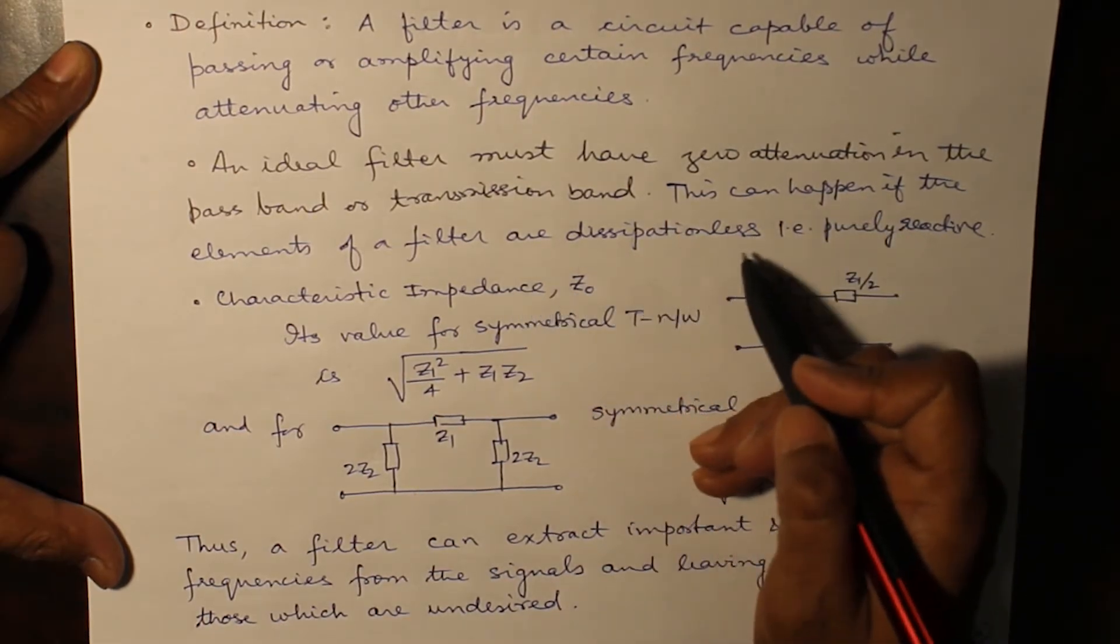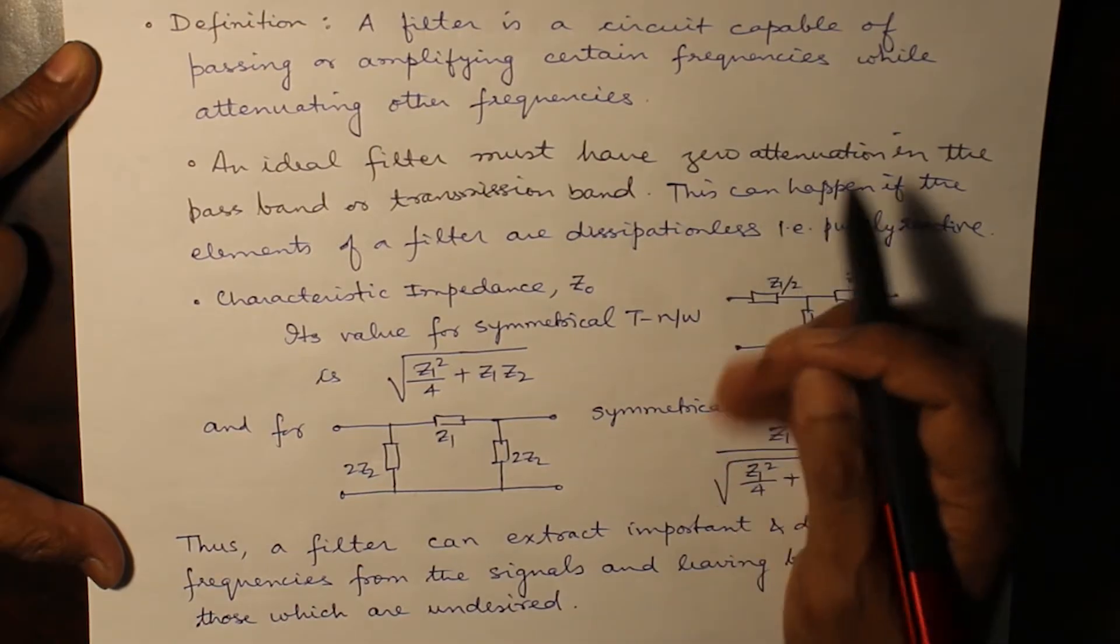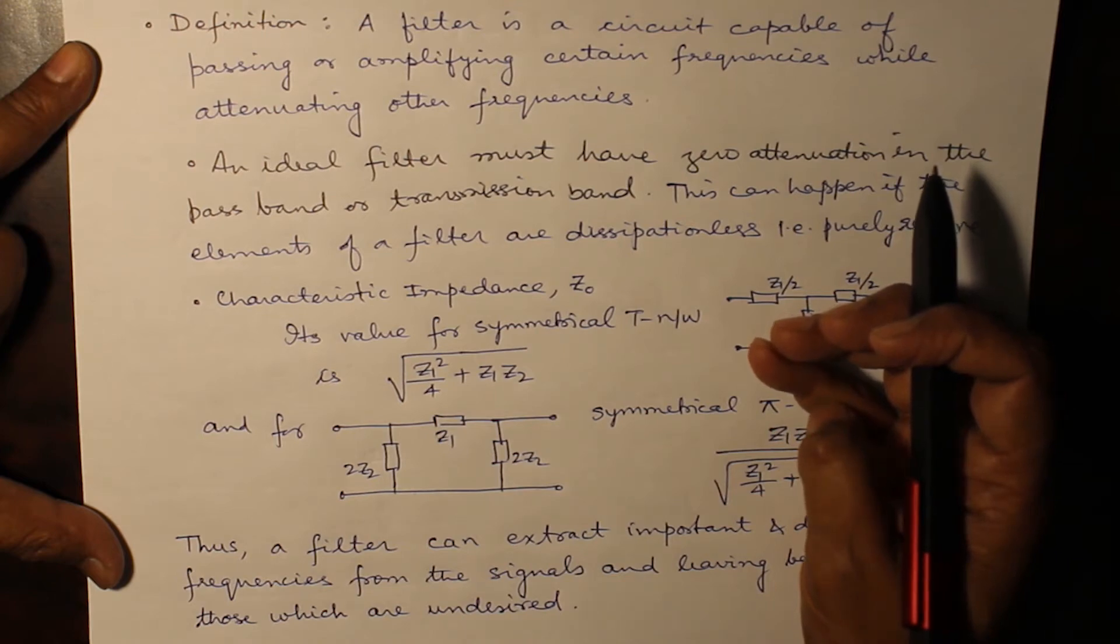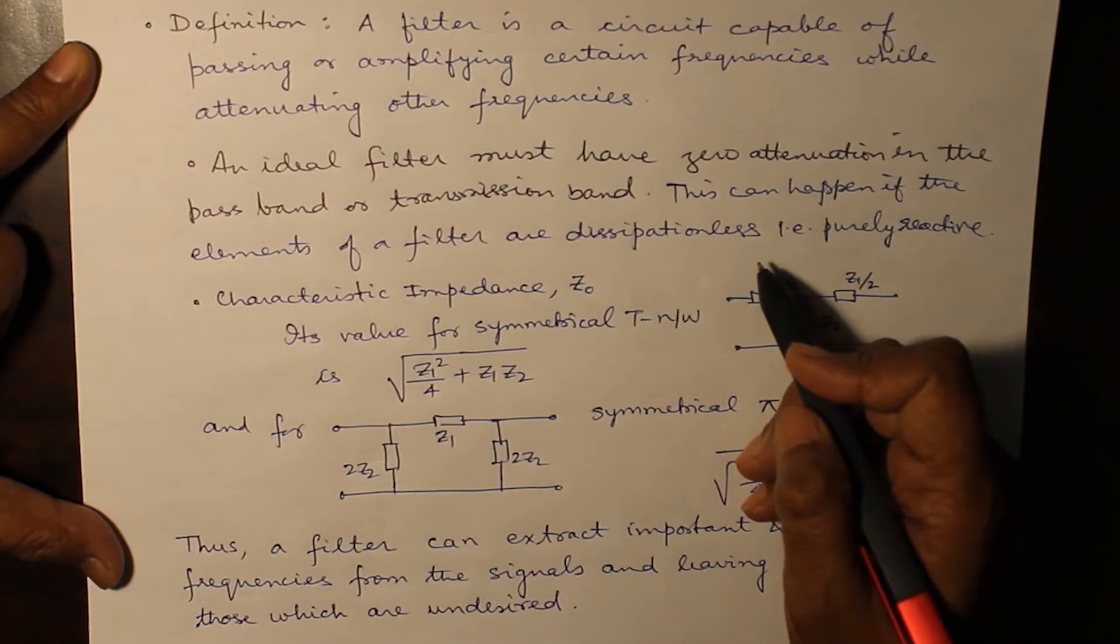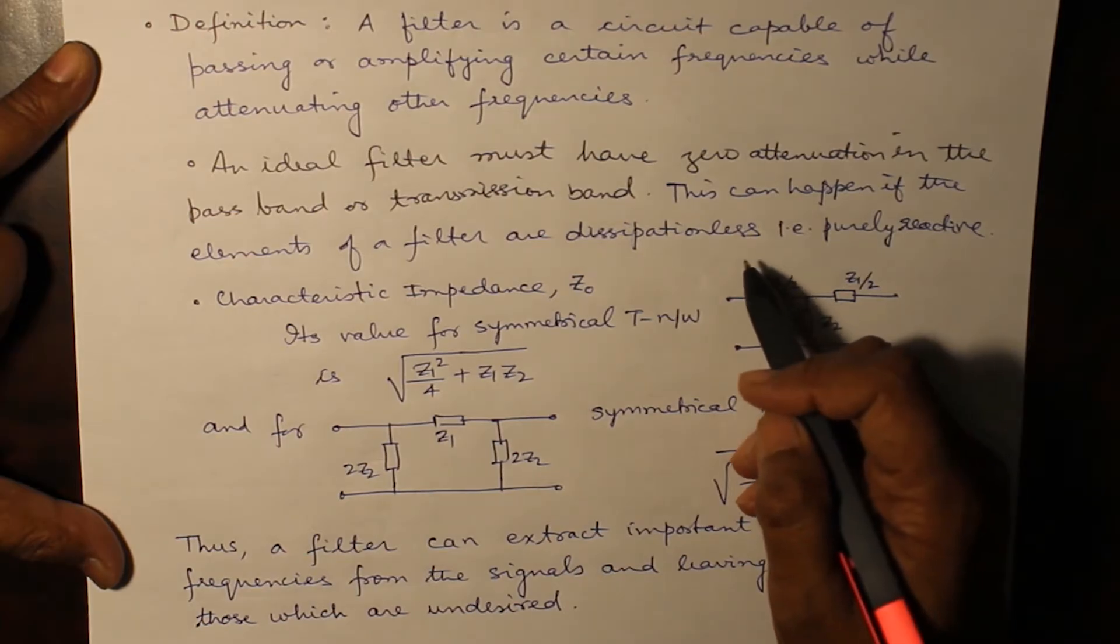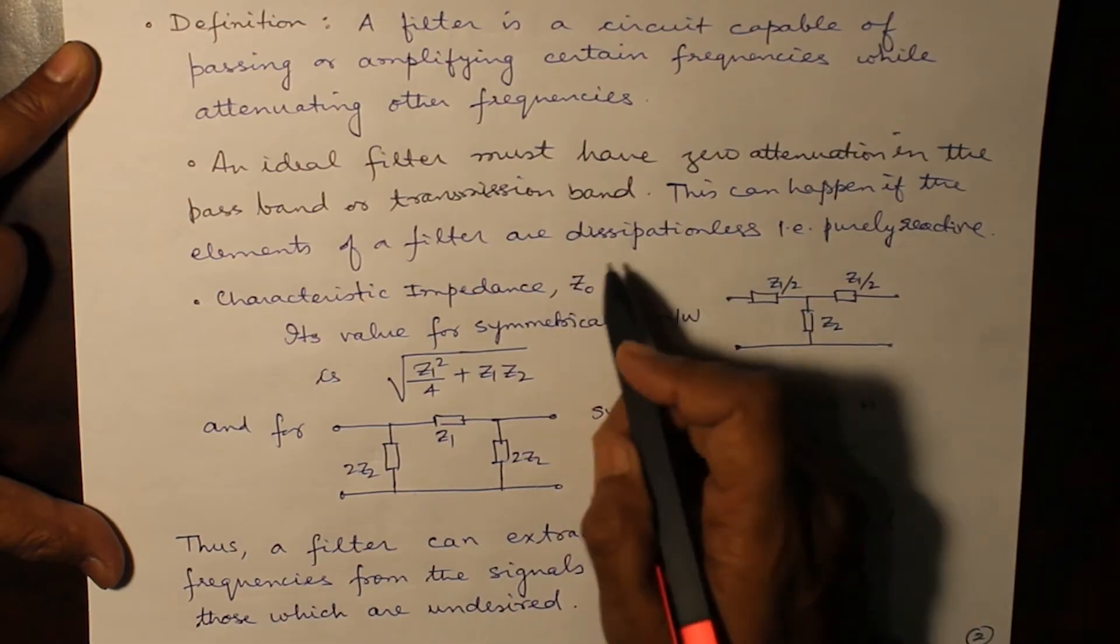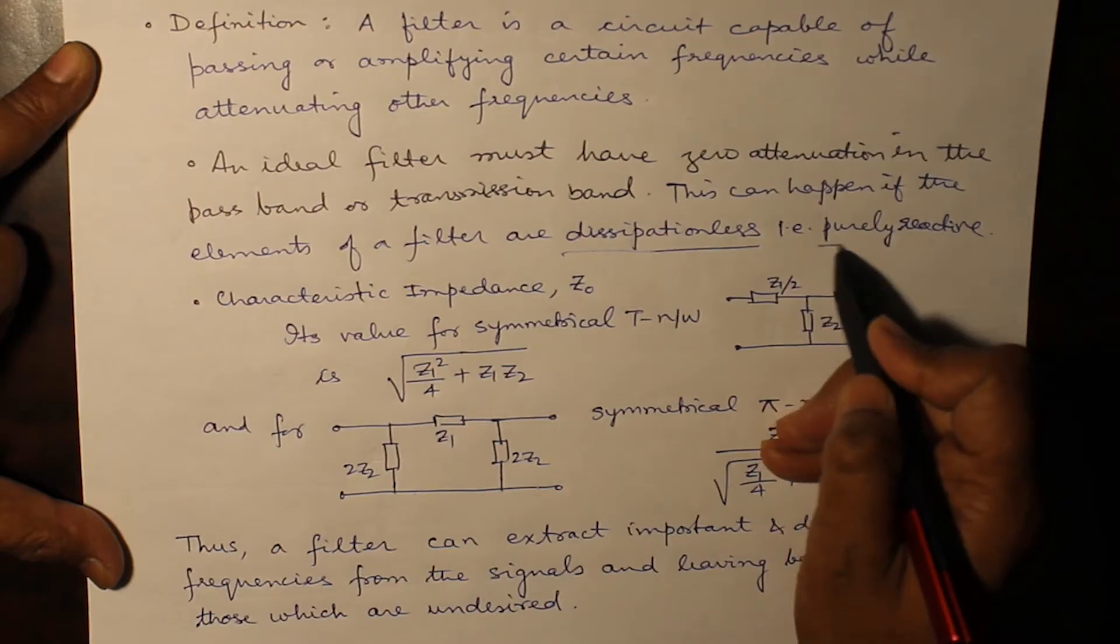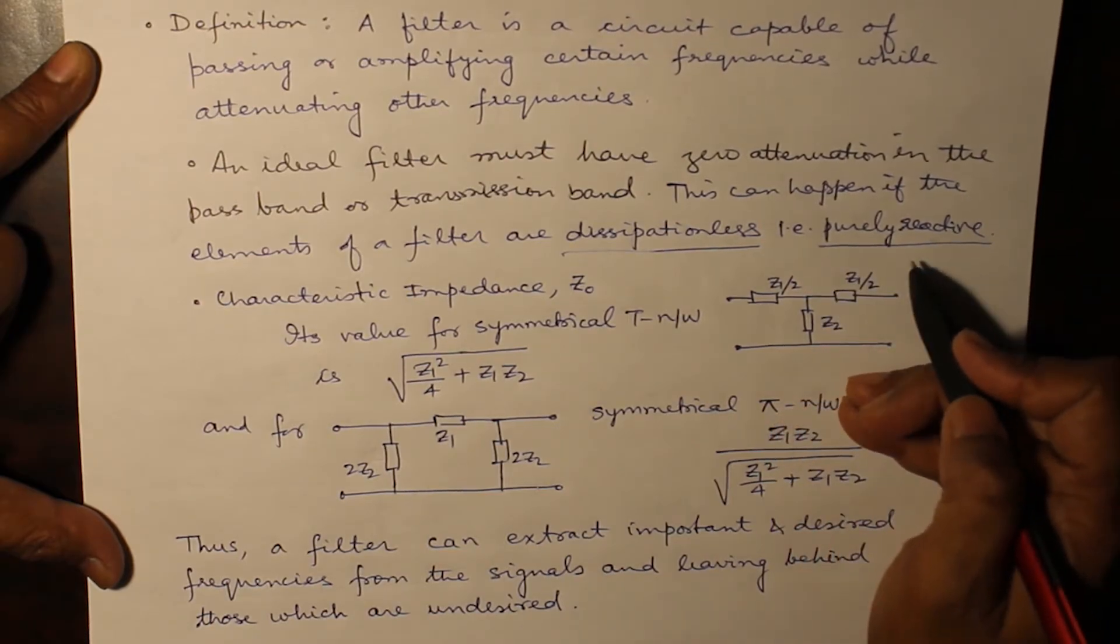The elements of a filter are dissipation-less. If you are only having inductor and capacitor and they are pure inductors and capacitors without having any resistive element, then that particular circuit is known as a dissipation-less circuit. It's a purely reactive circuit whether it can be an inductive circuit or a capacitive circuit.